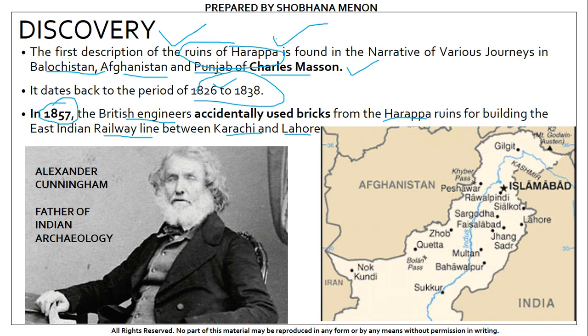After the engineers discovered it, the locals around these regions ended up using these bricks for their own personal purposes of constructing extensions of their houses. Mr. Alexander Cunningham, called the father of Indian archaeology and also the first ever Director General of the Archaeological Survey of India, commented that the amount of bricks taken from this site was enough to build a 100-mile railway line between the cities of Lahore and Multan — which is very unfortunate.